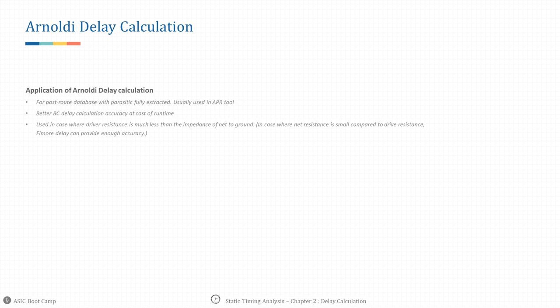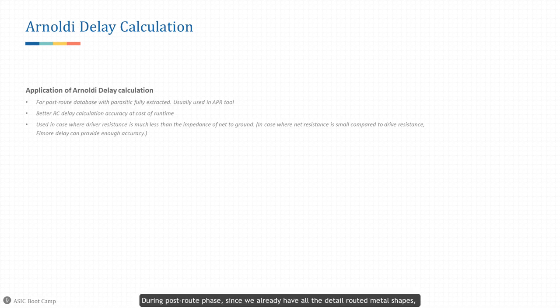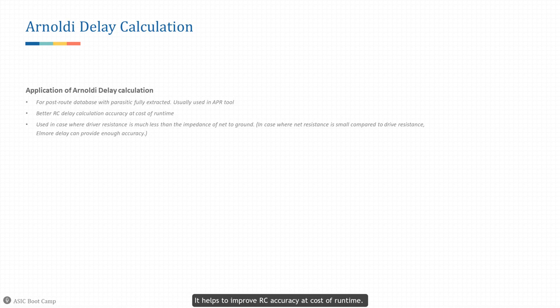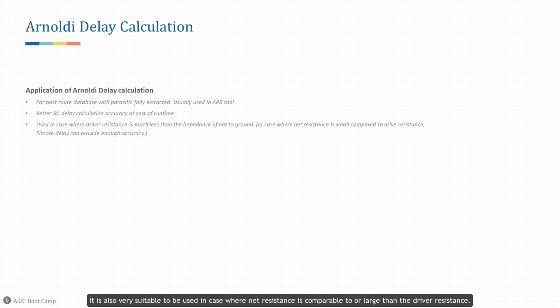Arnoldi delay calculation: during the post-route phase, since we already have all detailed-routed metal shapes, parasitic is a known factor, so we need to calculate delay more accurately than in the pre-route phase. Arnoldi delay calculation is usually used in place-and-route tools to take route parasitics into account. It helps improve RC accuracy at the cost of runtime, and is very suitable for cases where net resistance is comparable to or larger than the driver resistance.